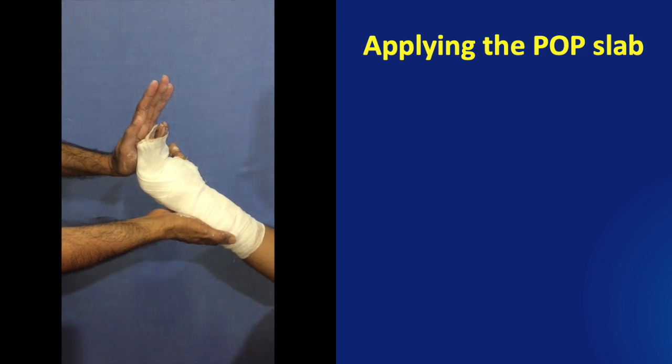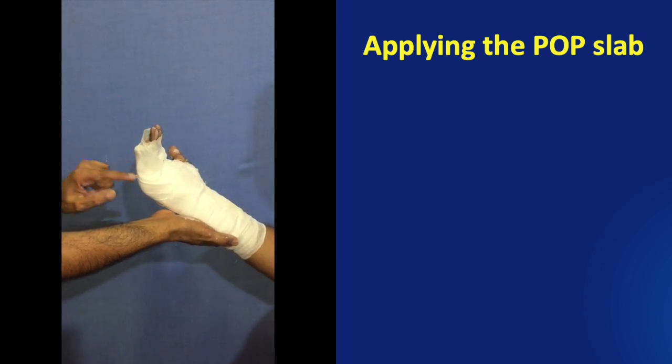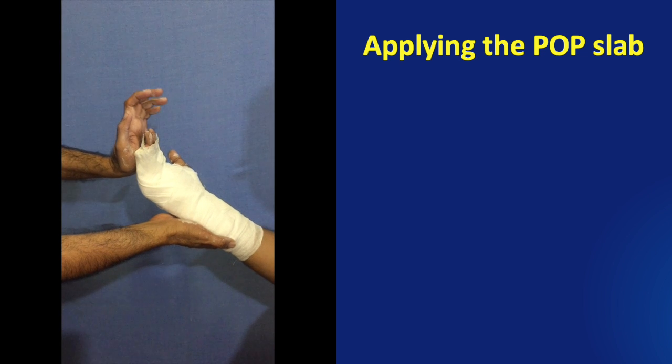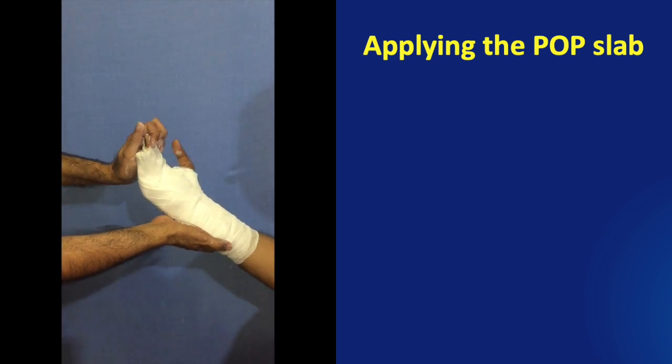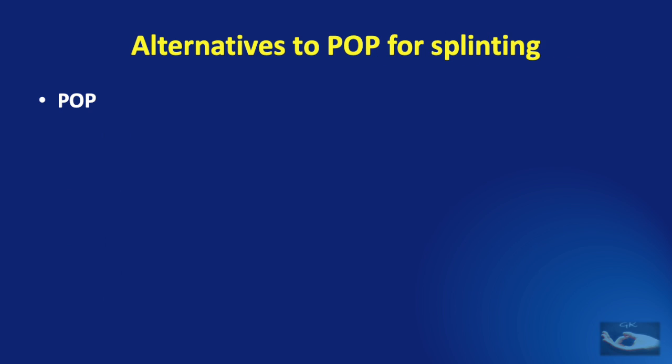After it has set completely we must apply another layer of bandage to make it neat. This bandage is secured with a sticking plaster. So now we have understood that immobilization of the hand is a very important step before managing the hand injury. And we have seen the method of immobilization using a POP or a plaster of Paris.